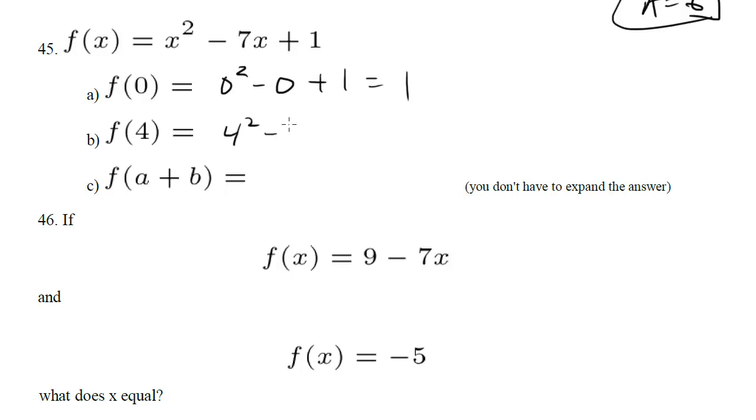Here we have 4 squared minus 7 times 4 plus 1. Well this is going to be 16 minus 28 is negative 12 plus 1 is negative 11.